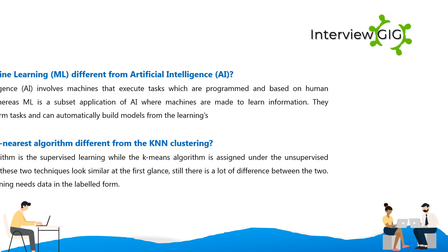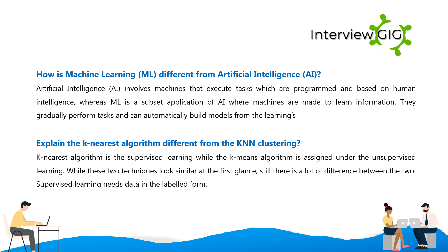How is machine learning different from artificial intelligence? Artificial intelligence involves machines that execute tasks programmed based on human intelligence, whereas machine learning is a subset and application of AI where machines are made to learn information, gradually perform tasks, and can automatically build models from their learnings.